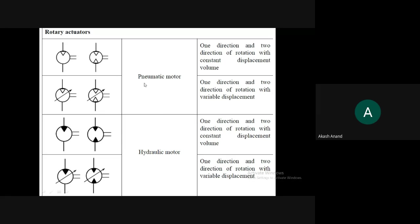In case of a pneumatic motor type, a circle represents the rotary actuator, and inside that you can see a triangle on one side — it is a hollow triangle. The triangle position on one side represents one direction of rotation. If the circle contains two triangles on two sides, it represents two directions of rotation — clockwise as well as anticlockwise.